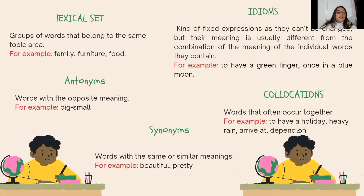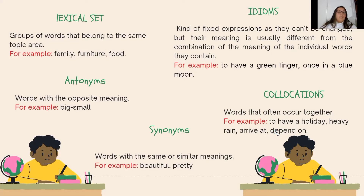Vocabulary words can come from their different meanings. For example, lexical sets, which are groups of words that belong to the same topic area. For example, family, furniture, food.